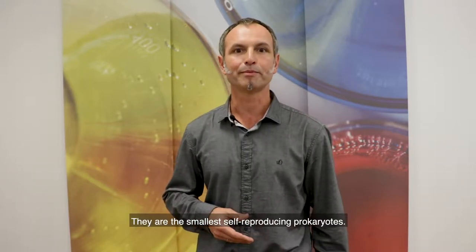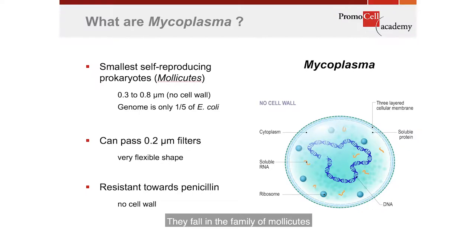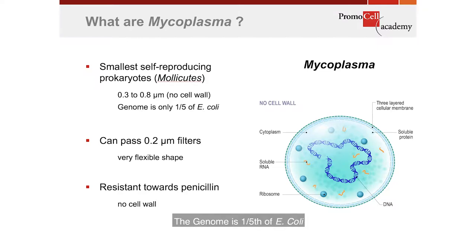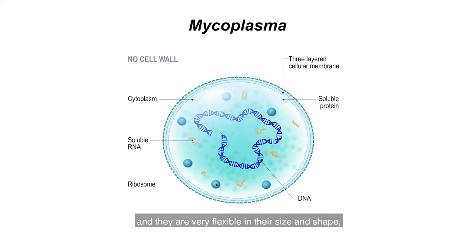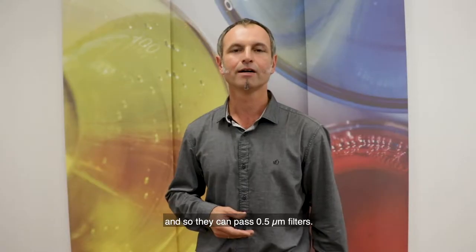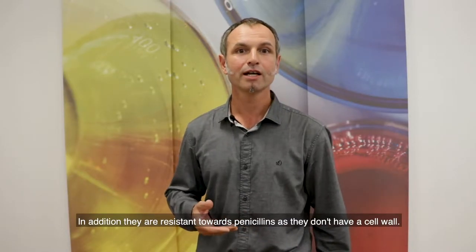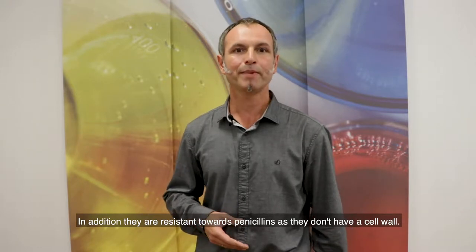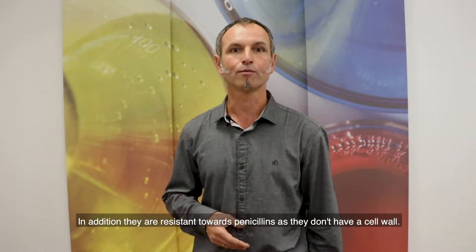What are mycoplasma? They are the smallest self-reproducing prokaryotes. They fall in the family of Mollicutes and are only 0.3 to 0.8 micrometers in diameter. The genome is one-fifth of E. coli. They are very flexible in their size and shape, so they can pass 0.5 micrometer filters. In addition, they are resistant towards penicillins as they don't have a cell wall.